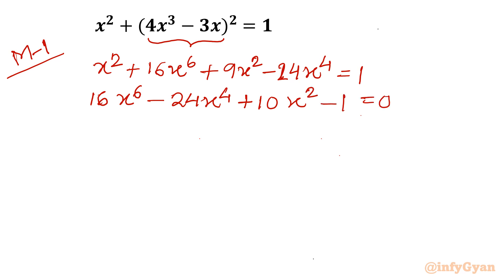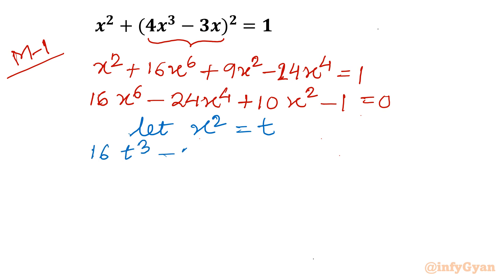This is a hexic equation with x², x⁴, and x⁶ terms. It's better to use substitution: let x² = t. Our equation converts to 16t³ - 24t² + 10t - 1 = 0, which is a cubic equation.